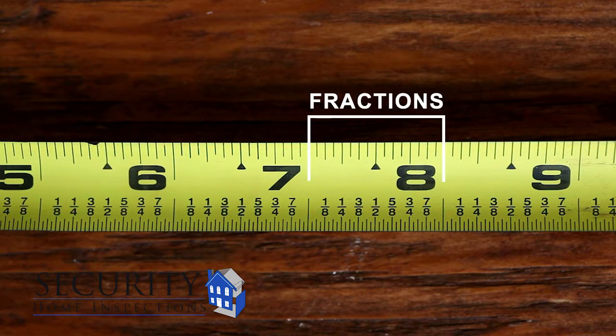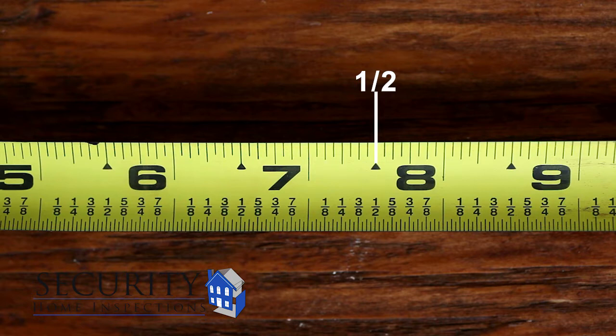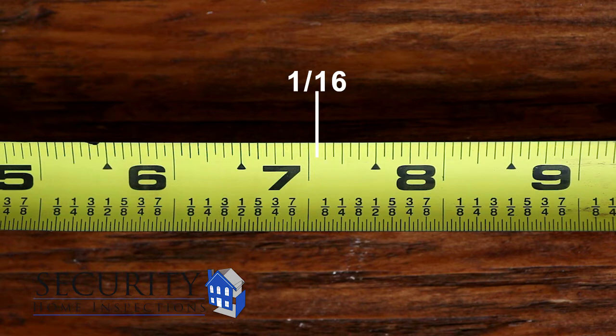The shorter lines indicate fractions of an inch. The second largest line is the half-inch mark, followed by the one-quarter inch, one-eighth inch, and one-sixteenth inch marks.